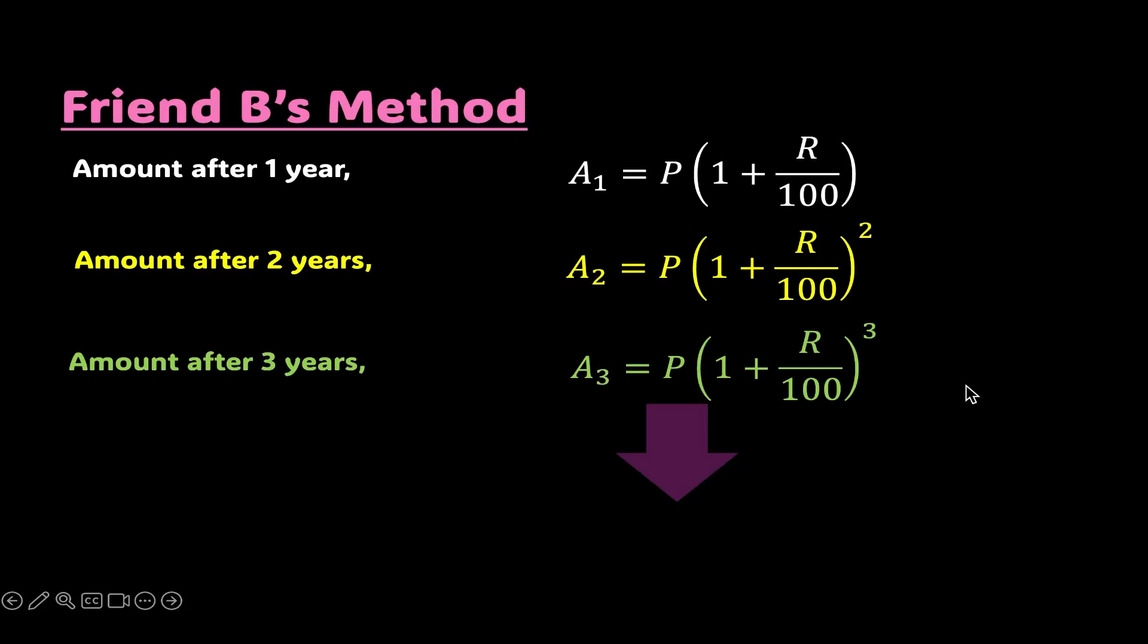And thus we reach the condition that the amount after T years compounded annually is given by P times 1 plus R over 100 to the power of T, where T is basically the number of years that we have.